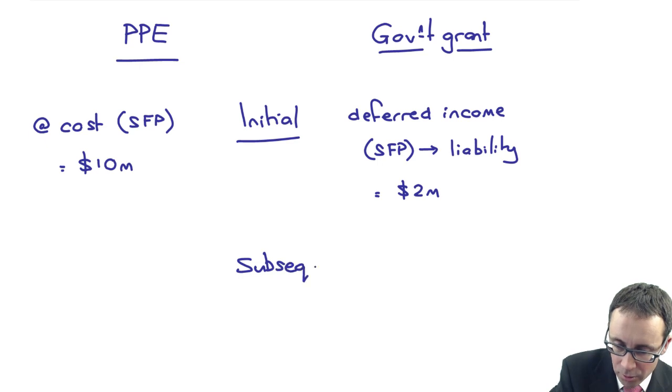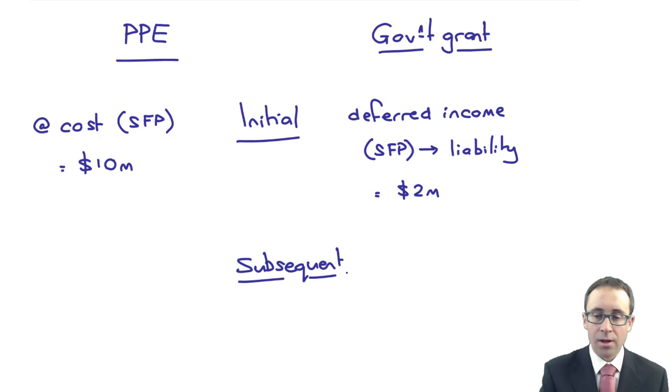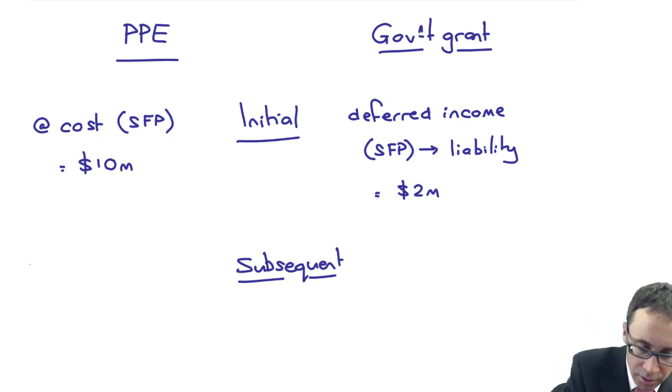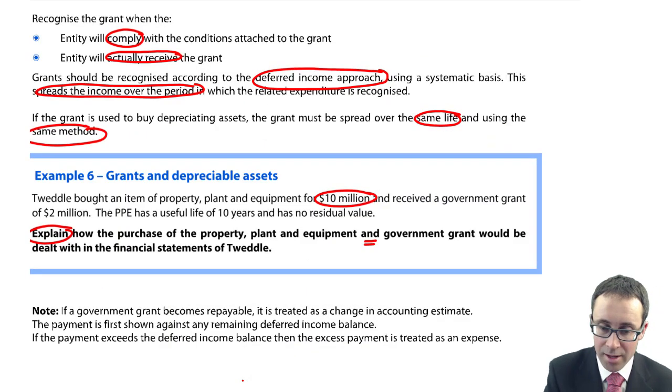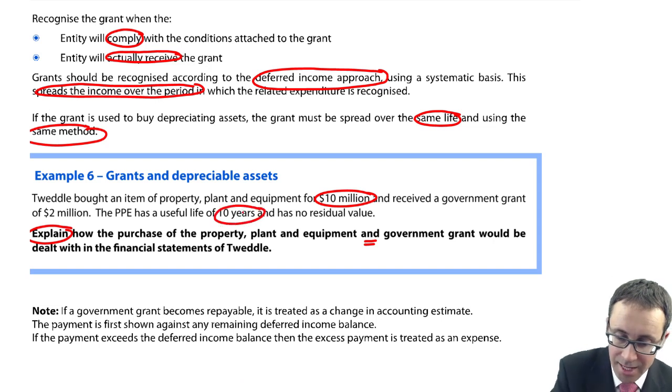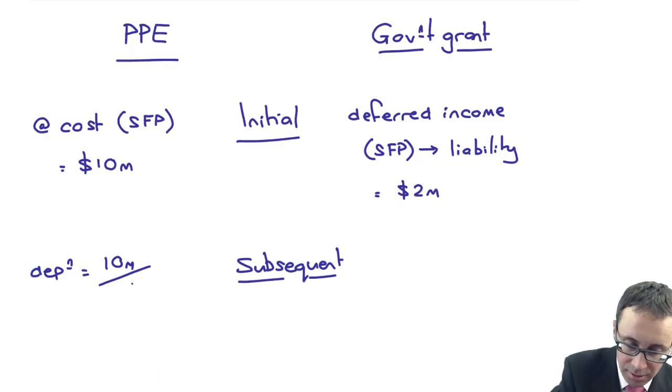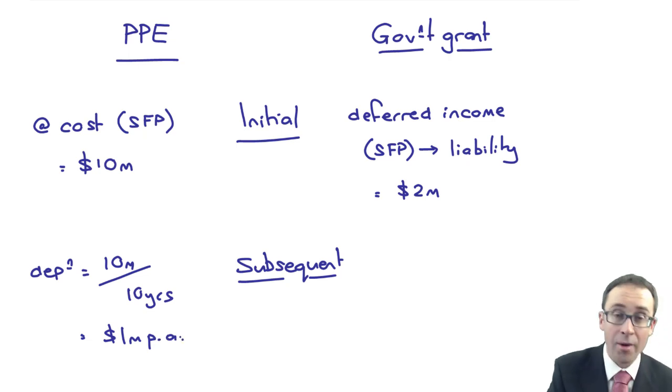We can then go through there and think about your subsequent measurement. What you've got there is you are going to depreciate or charge depreciation. What you've got there? And then the deferred income, what do we have there? Is that 10 years? So 10 divided by your 10 years. So is that $1 million per annum.